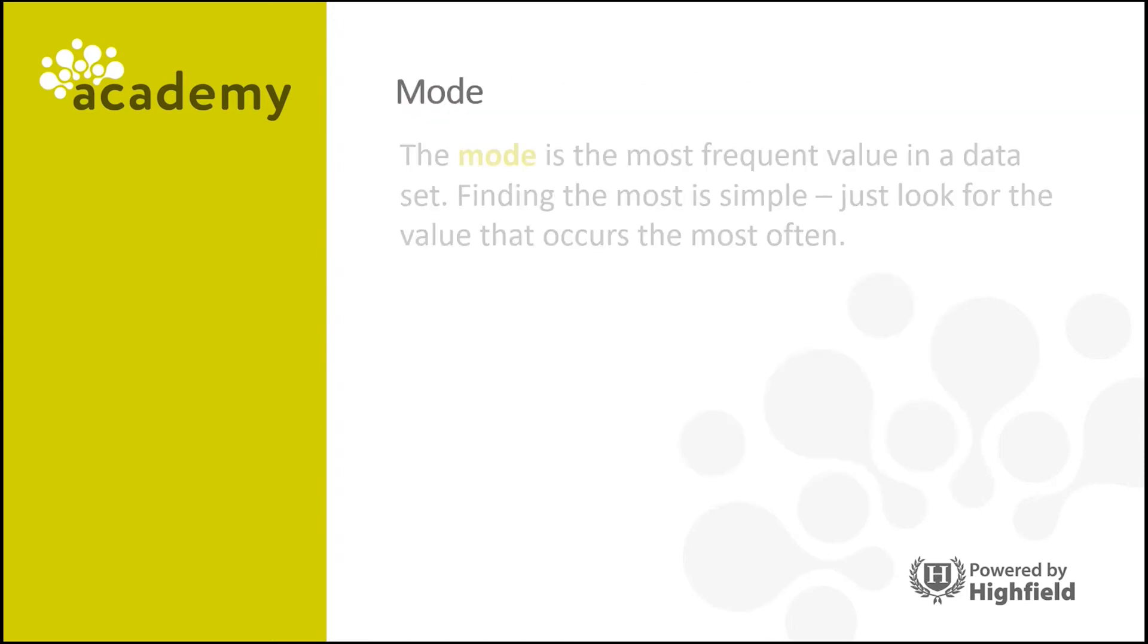Now let's move on to mode. The mode is the most frequent value in a set of data. So finding the mode is simple. All you've got to do is find the value that occurs the most often in your set of data.